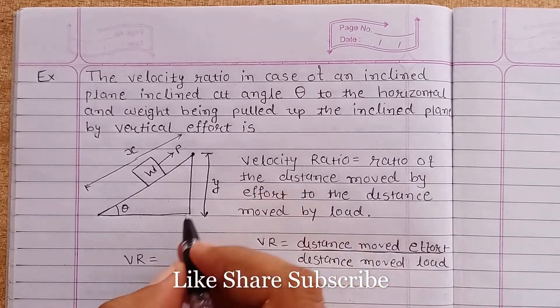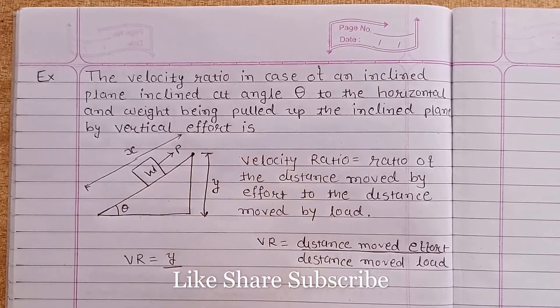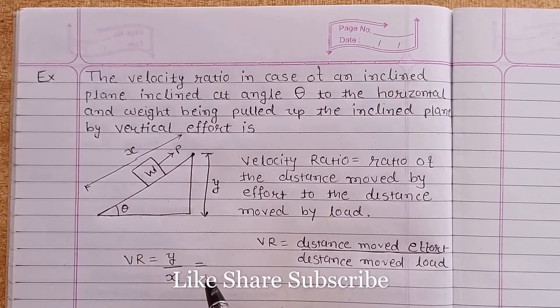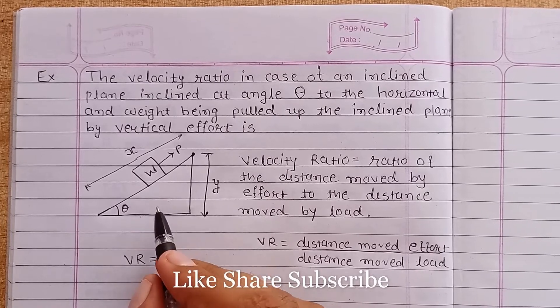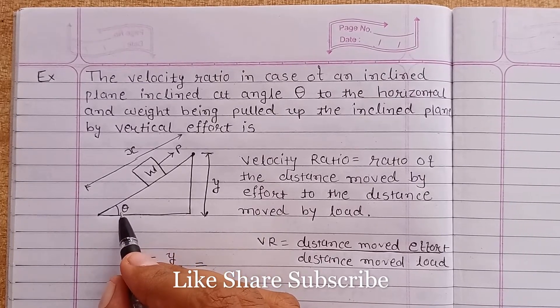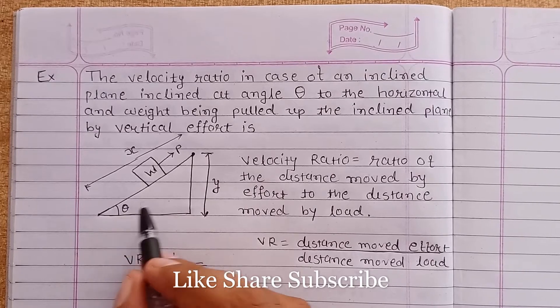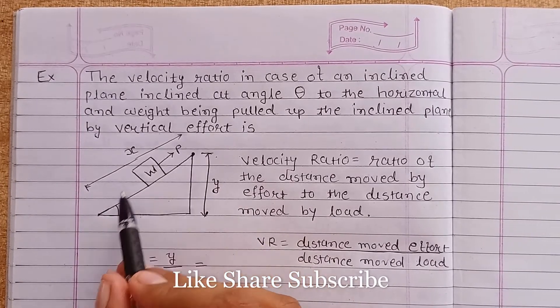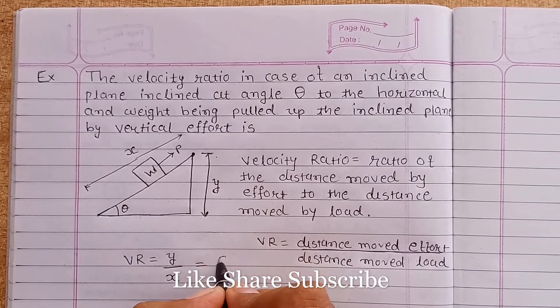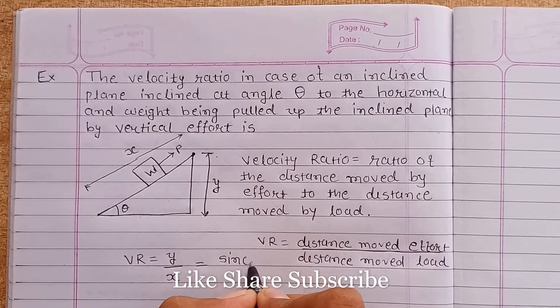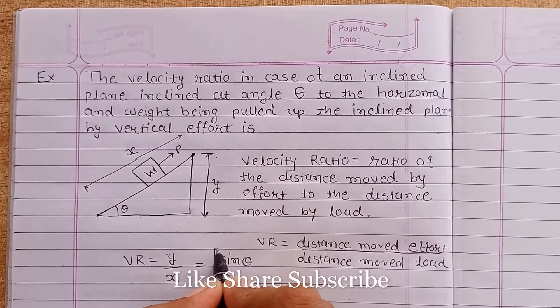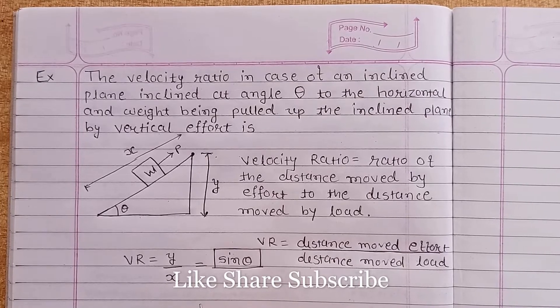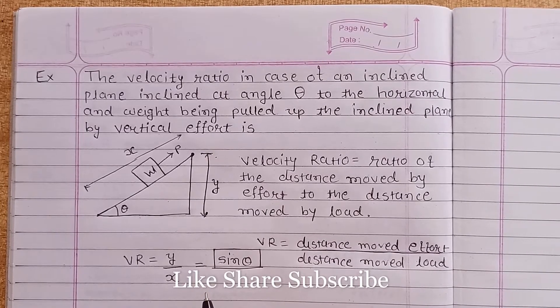Distance moved by the effort, that is Y, and distance moved by the load, that is X. So VR equals Y upon X. If we closely observe this using the trigonometric function, sin theta equals this side Y upon hypotenuse X, which is equivalent to sin theta. So this is our answer: velocity ratio equals sin theta. I hope you understand the concept of velocity ratio.